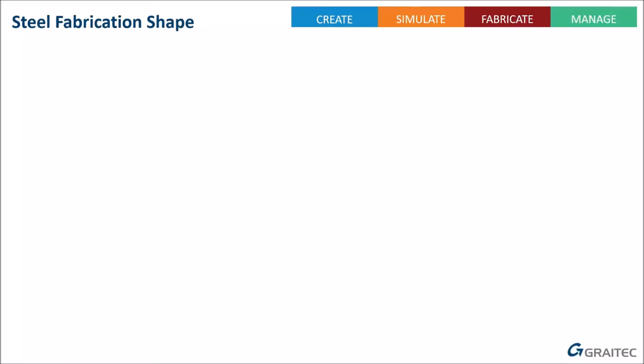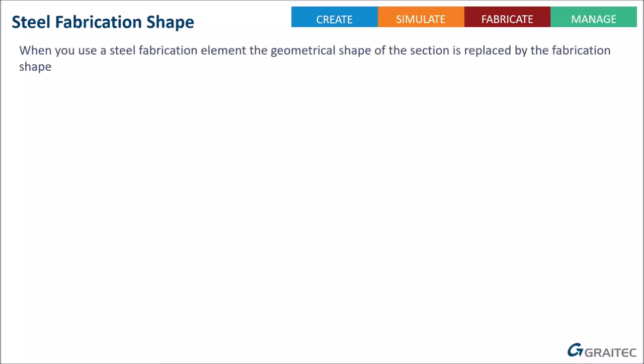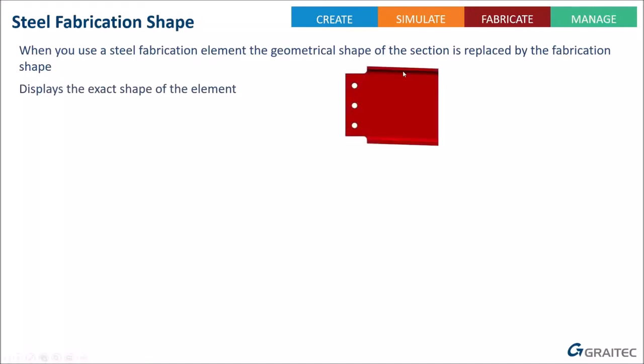The steel fabrication shape causes some confusion. As soon as you apply a steel fabrication element - one of the connections, bolts, anchors, holes, cuts, copes, or mitres from the steel tab - the geometrical shape is replaced by the steel fabrication shape. You get the exact shape of the element; to Revit it is still a structural framing or column, just with this extra layer added for these tools to work.